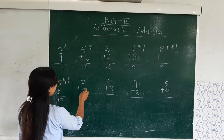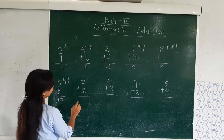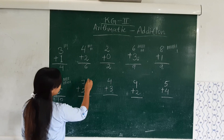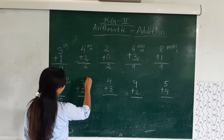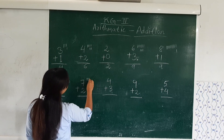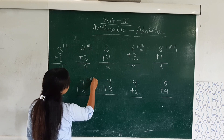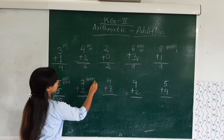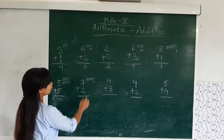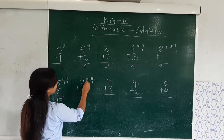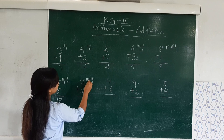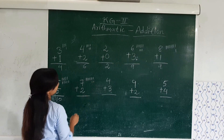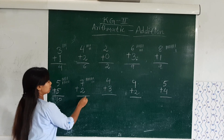Now the next one: 7 plus 2. What is the result of 7 plus 2? We will merge 7 times: 1, 2, 3, 4, 5, 6, 7. Here we have 2: 1, 2. Now we will find the number: 1, 2, 3, 4, 5, 6, 7, 8, 9. So here we have the result 9.